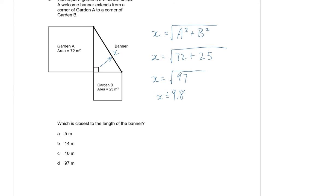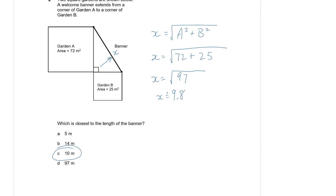The question says which is the closest, so 9.8 is pretty close to 10 — that's your answer. Now 97 is way too big, but notice it did show up in our solution. If you had no idea how to solve this and just added 72 and 25 to get 97, you'd say 'that must be right because it showed up.' But that's exactly how EQAO is tricky — the other answers are there to almost trick you.